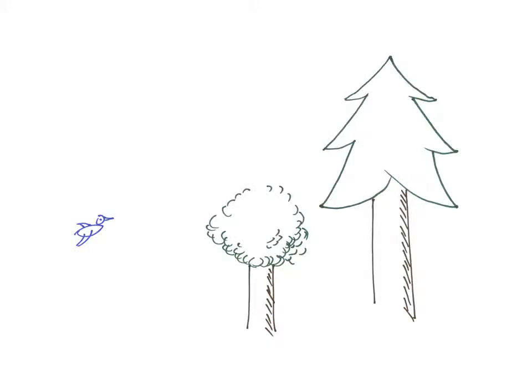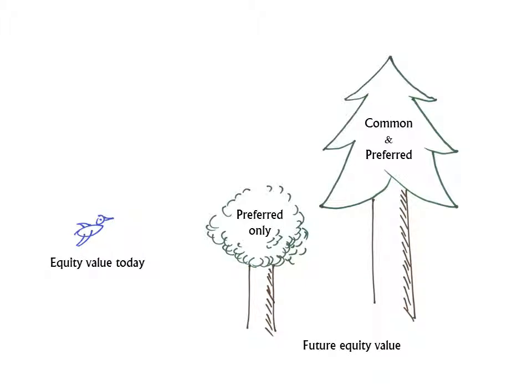Rather than trying to explain the OPM with numbers and graphs, we're going to use the image of a bird and two trees. The bird represents the company's equity value today. The two trees represent possible future values for the equity. The shorter tree — let's say it's an oak — represents a lower value. At this low value, only the preferred liquidation preference is paid out. There is not sufficient equity value to pay the common as well.